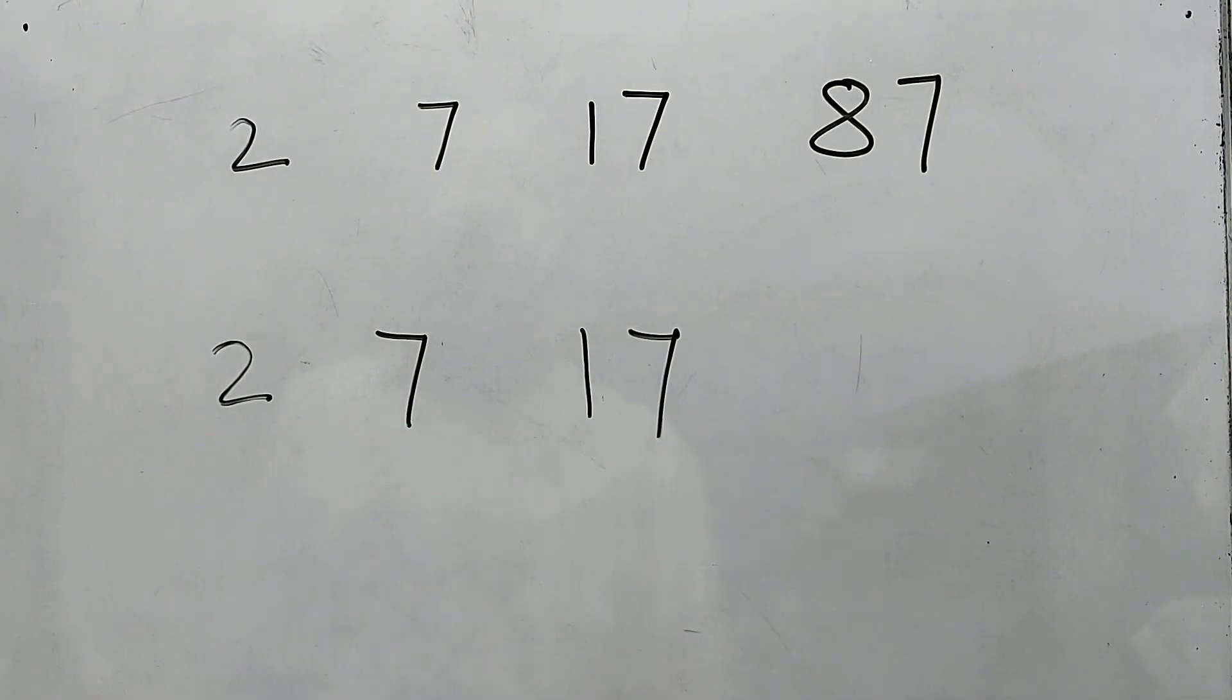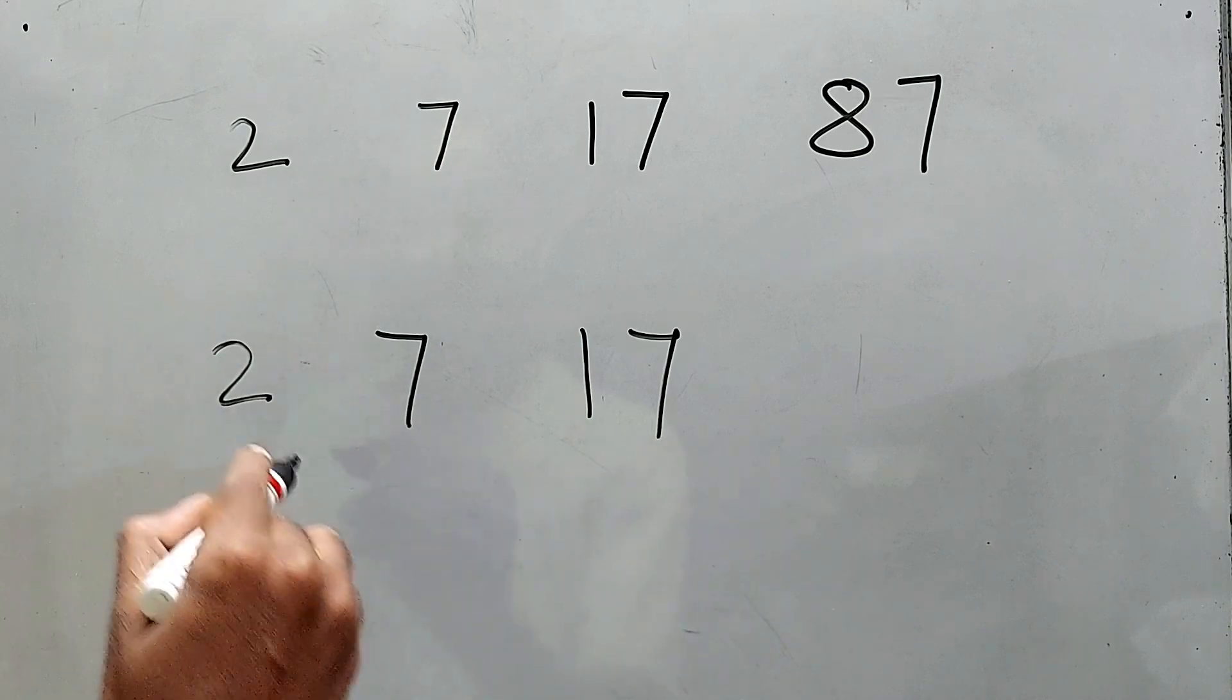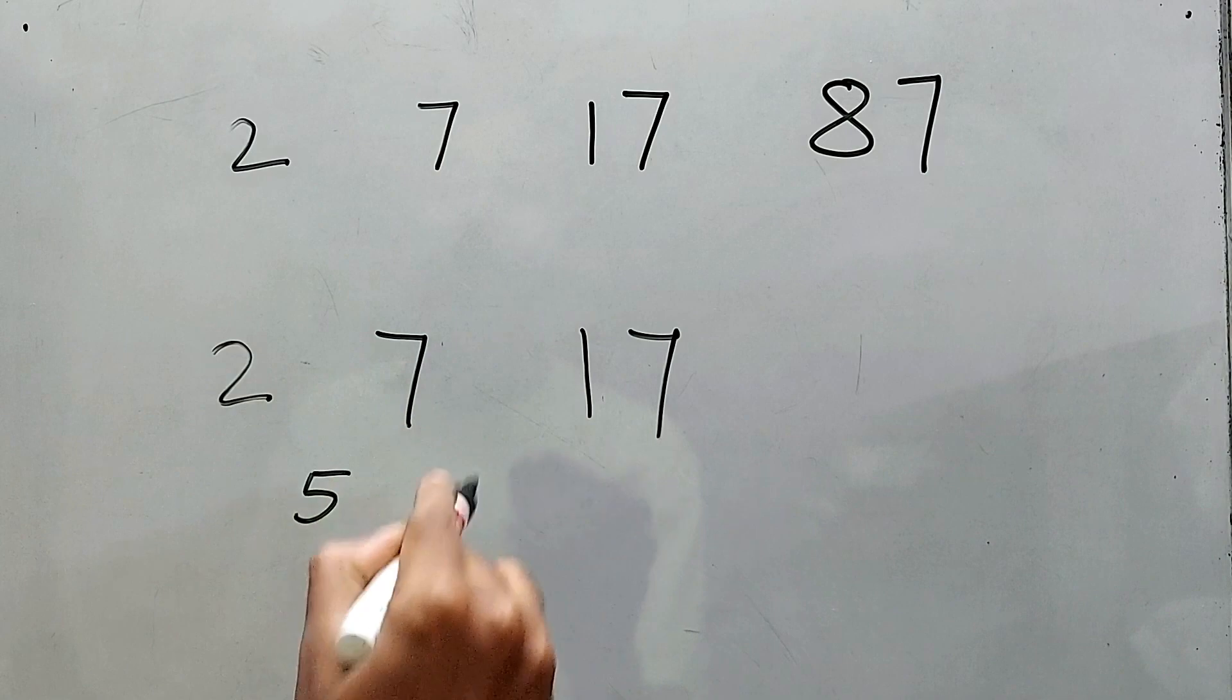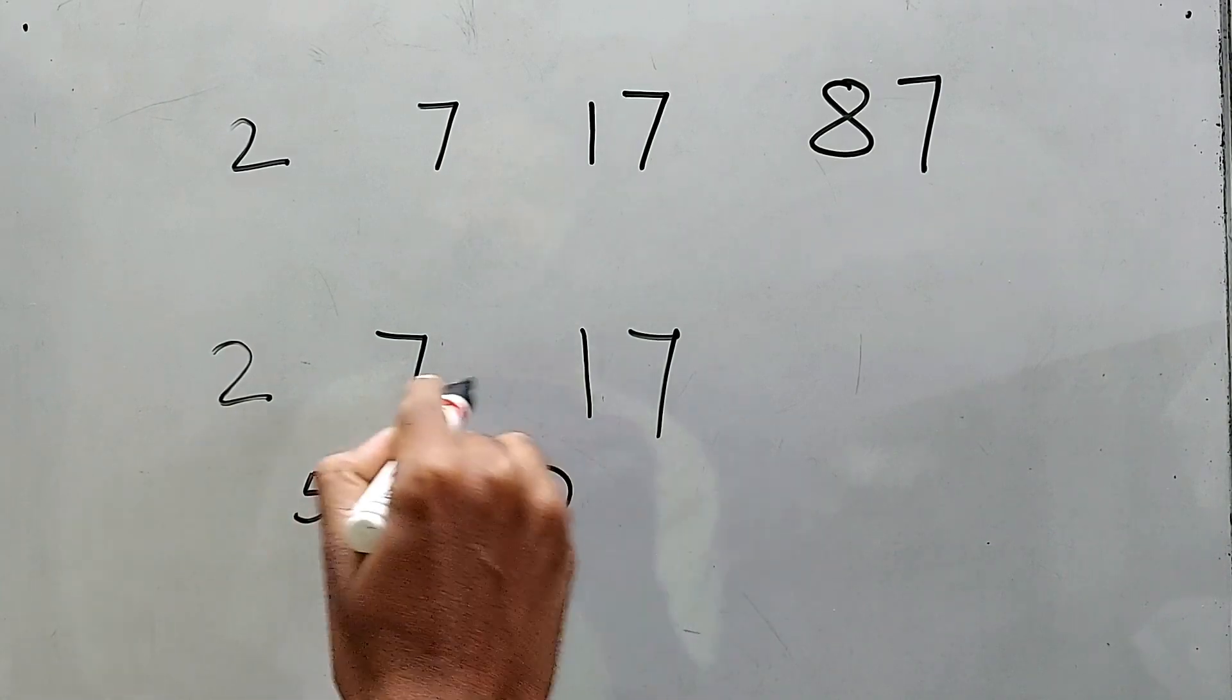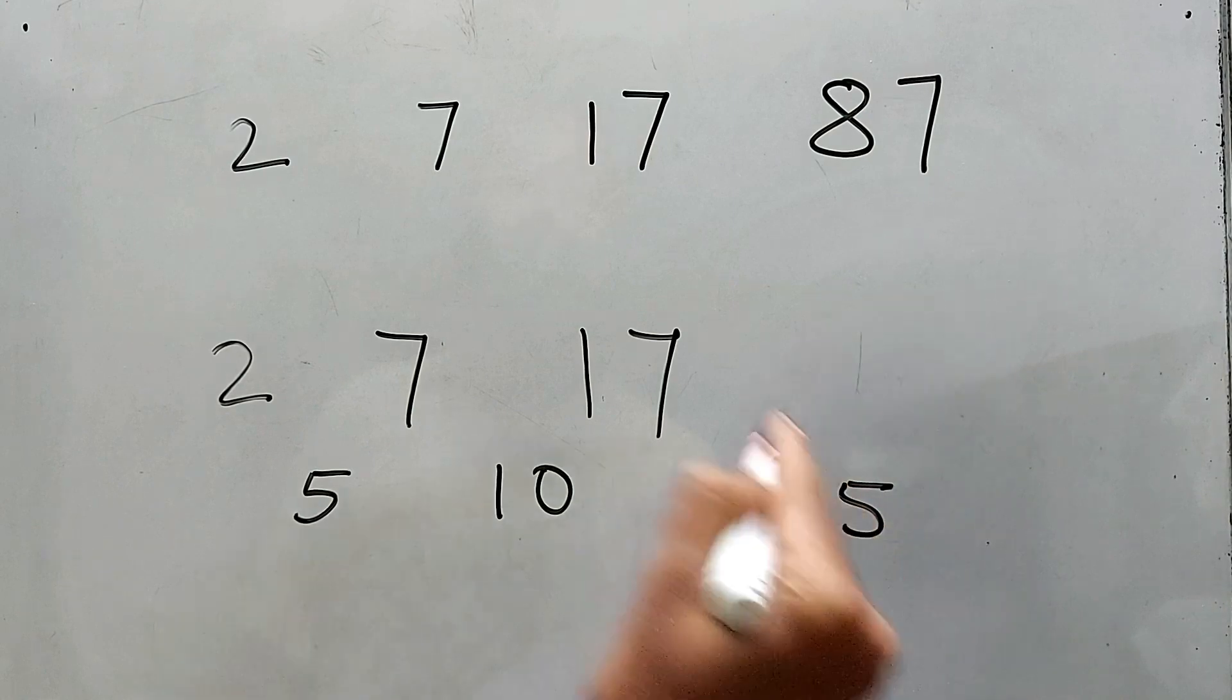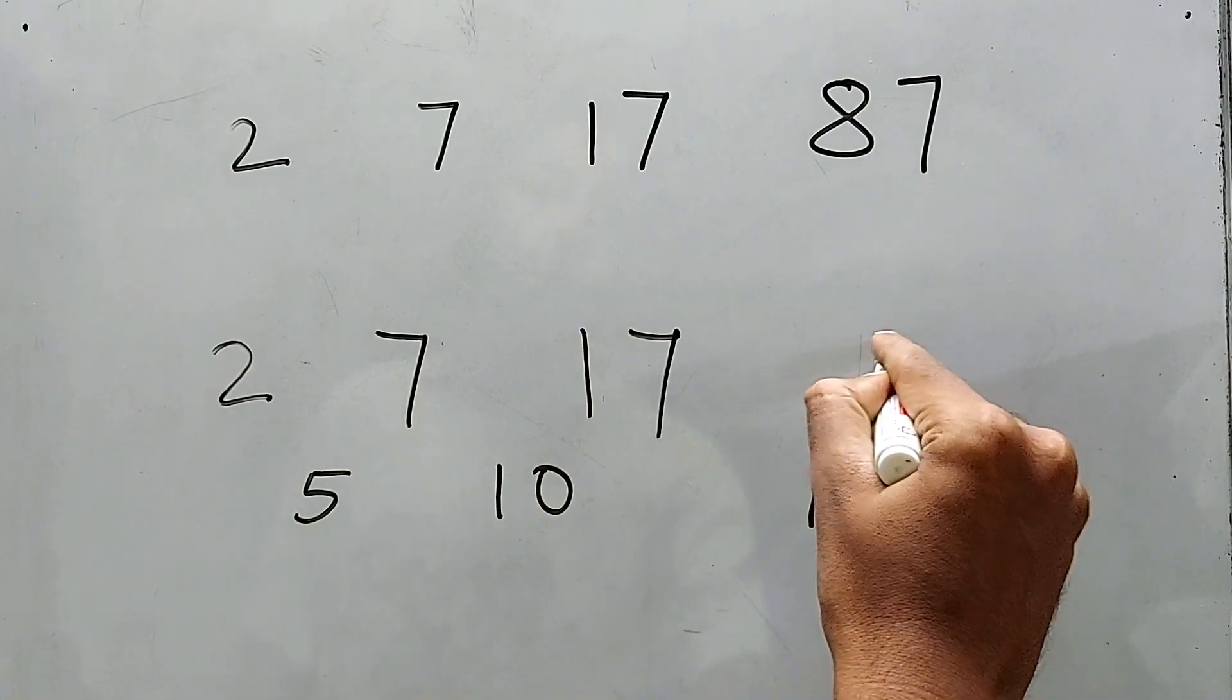Definitely you will be able to solve it. It is an easy one. Congratulations to all of you if you already solved it. If not yet solved, don't worry, I'll let you know. See, the easier one is 7 minus 2 is 5, right? And 17 minus 7 is 10. So definitely this next difference will be 15, so 15 plus 17 is 32.